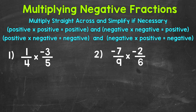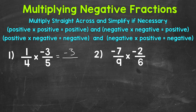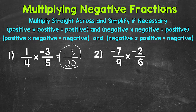Let's jump into our examples, starting with number one, where we have one fourth times negative three fifths. We multiply straight across, so let's multiply our numerators first: one times negative three gives us negative three. And then for our denominators, four times five equals 20. The only common factor between our numerator and denominator is one, so we are in simplest form. Our answer is negative three twentieths.